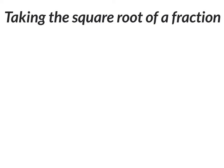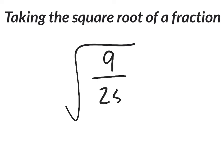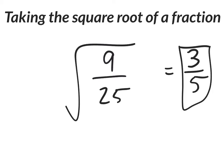Taking the square root of a fraction is pretty easy to do. In order to understand how to take the square root of a fraction, like let's say I had the square root of 9 over 25, the answer will be 3 over 5. However, let me give you the explanation.